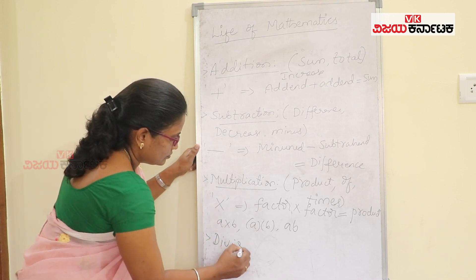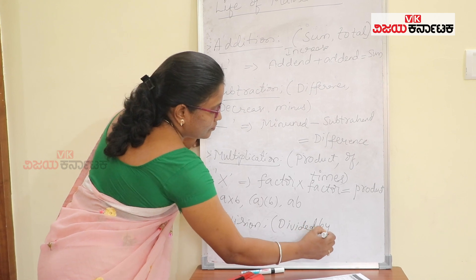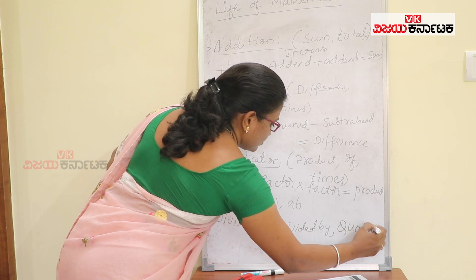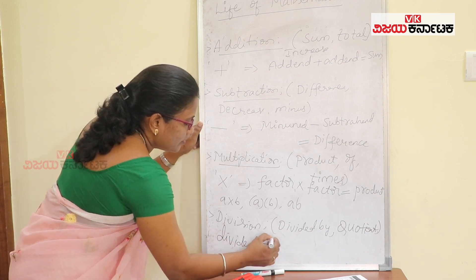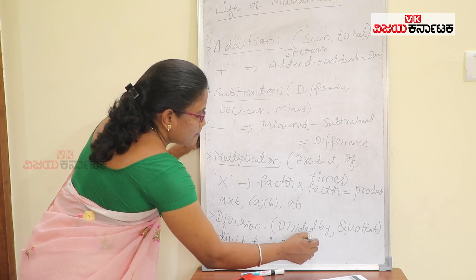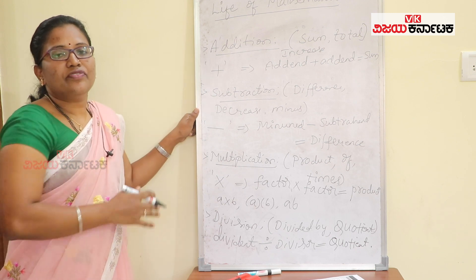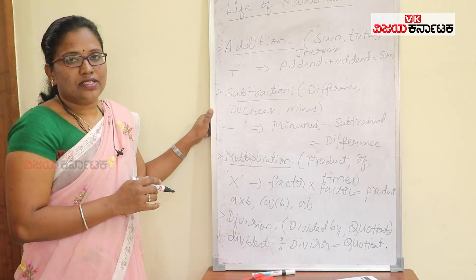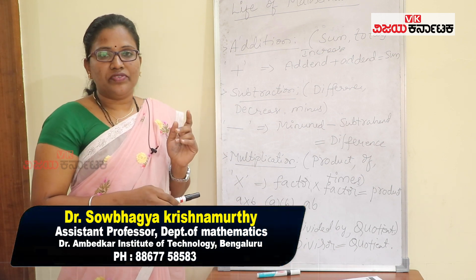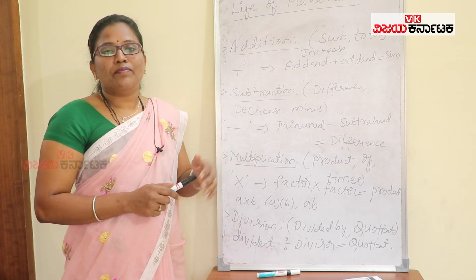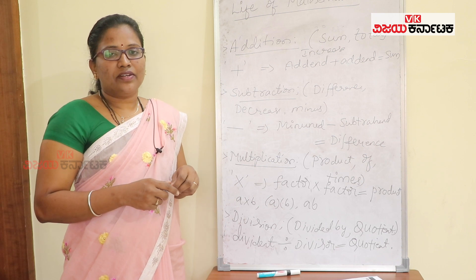Divisions: the key terms are divided by and quotient. These are the standard forms for representing mathematical operations. This is basic mathematics — addition, subtraction, multiplication, and division. If you want to go to the next level of mathematics, it is easy once you have this foundation.